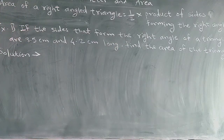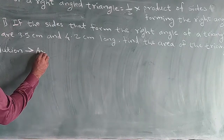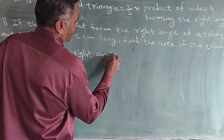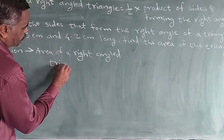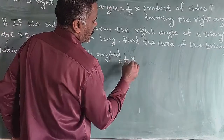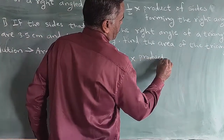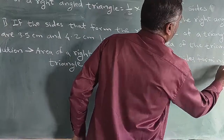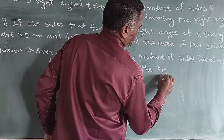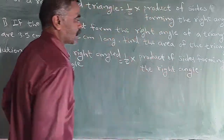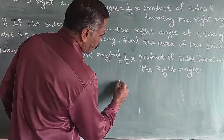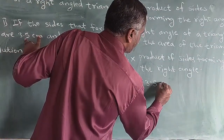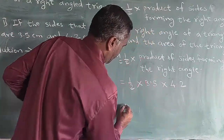The solution is: the area of the right angle triangle is equal to one half into product of sides forming the right angle. Putting the values in the formula, we get: area is equal to one half into 3.5 cm into 4.2 cm.